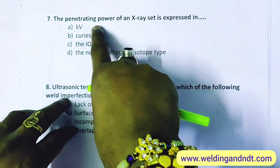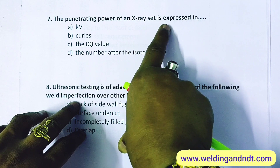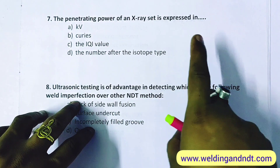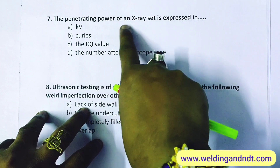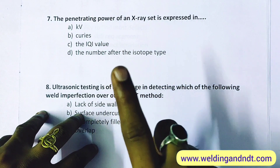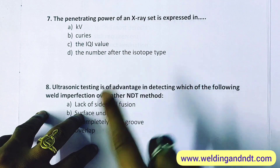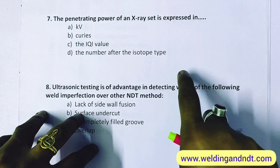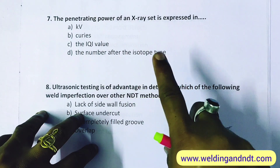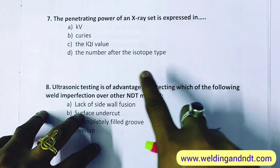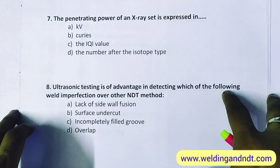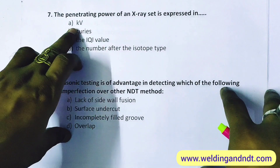Question 7: the penetrating power of an X-ray set is expressed in kilovolt. The penetrating power of a radioactive isotope or gamma rays can be expressed by the type of isotope. So the answer will be A.